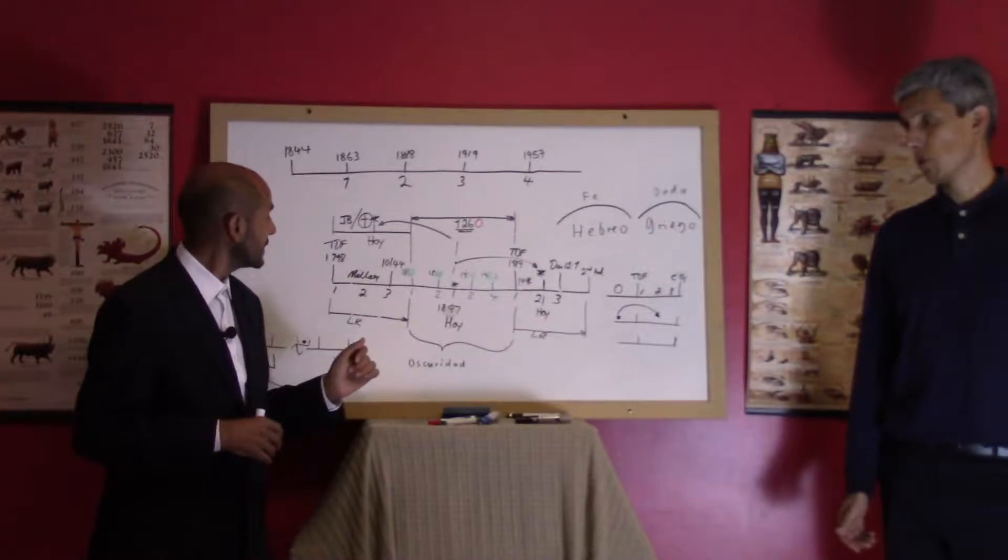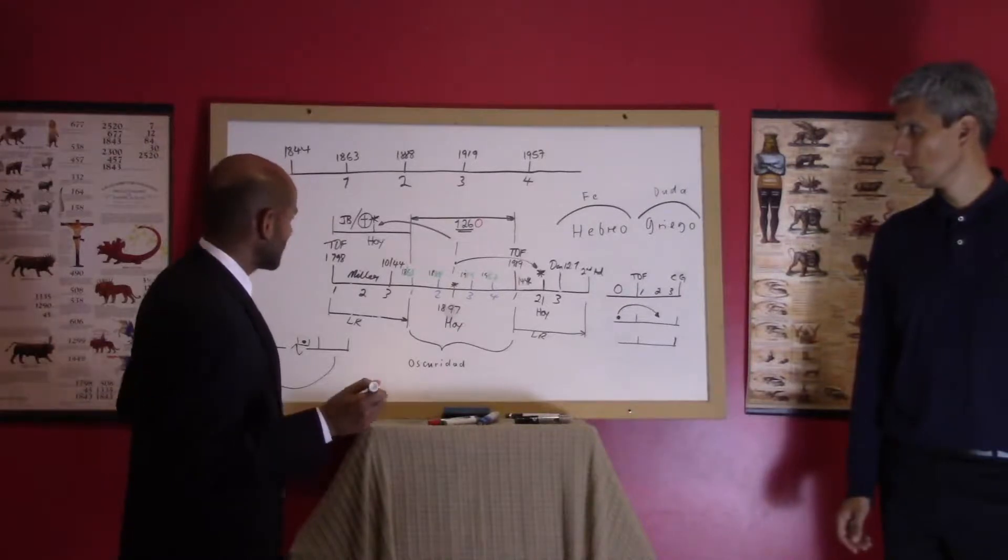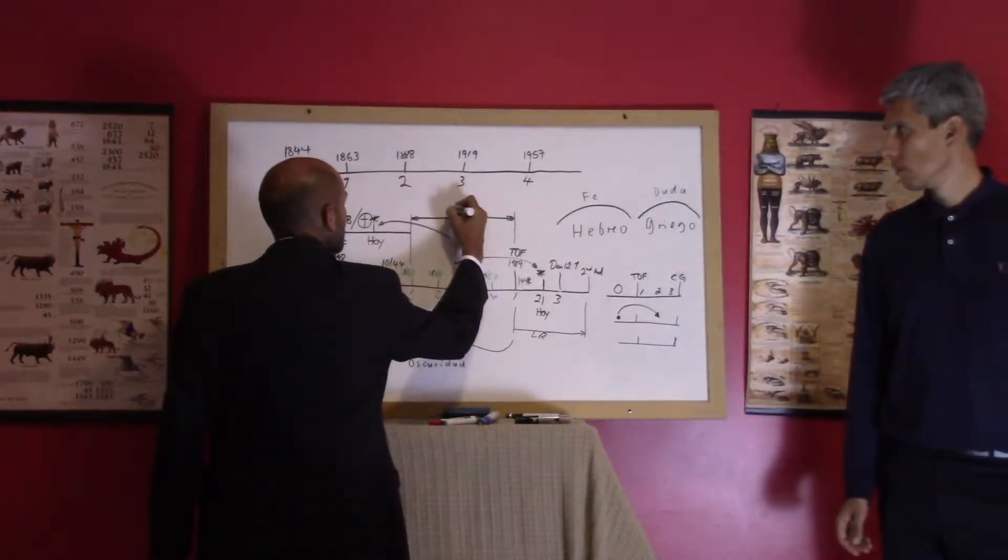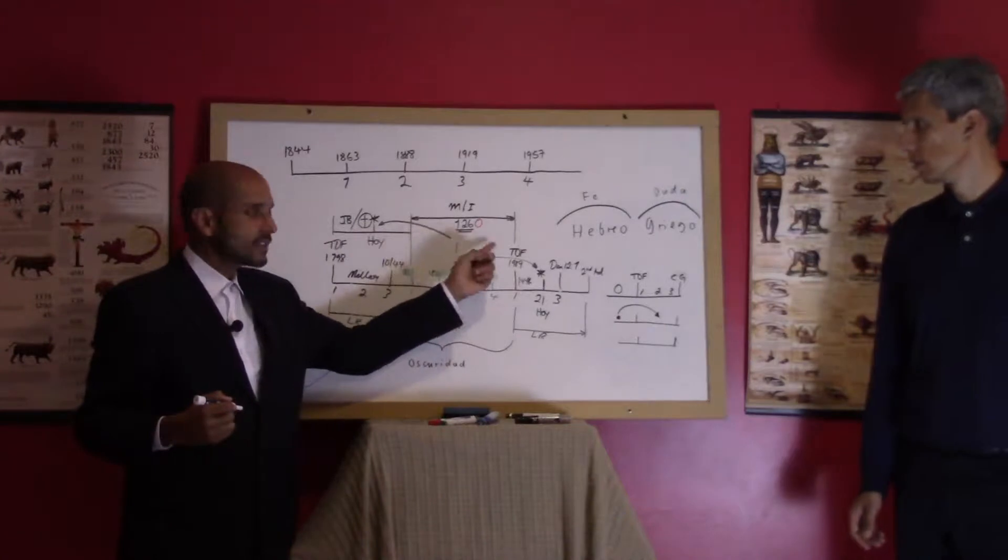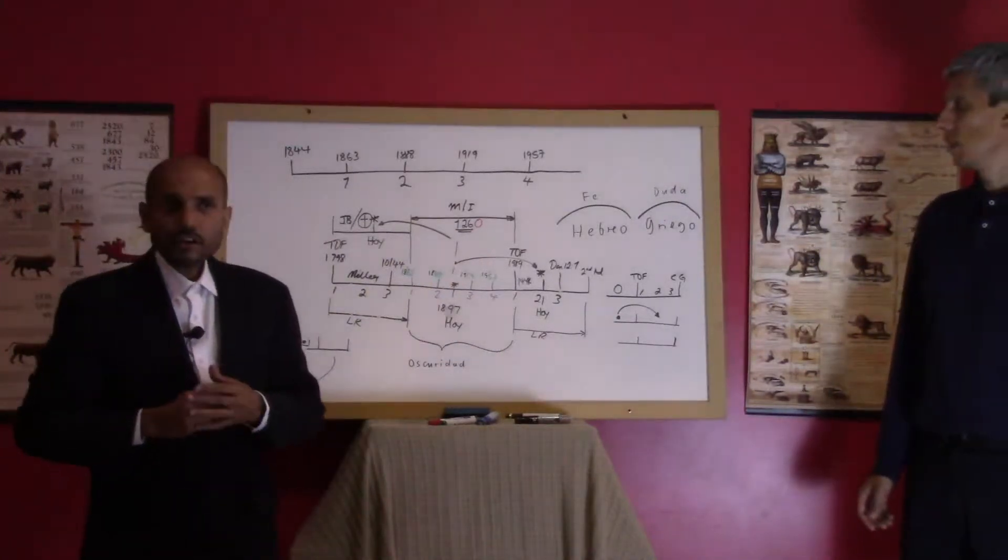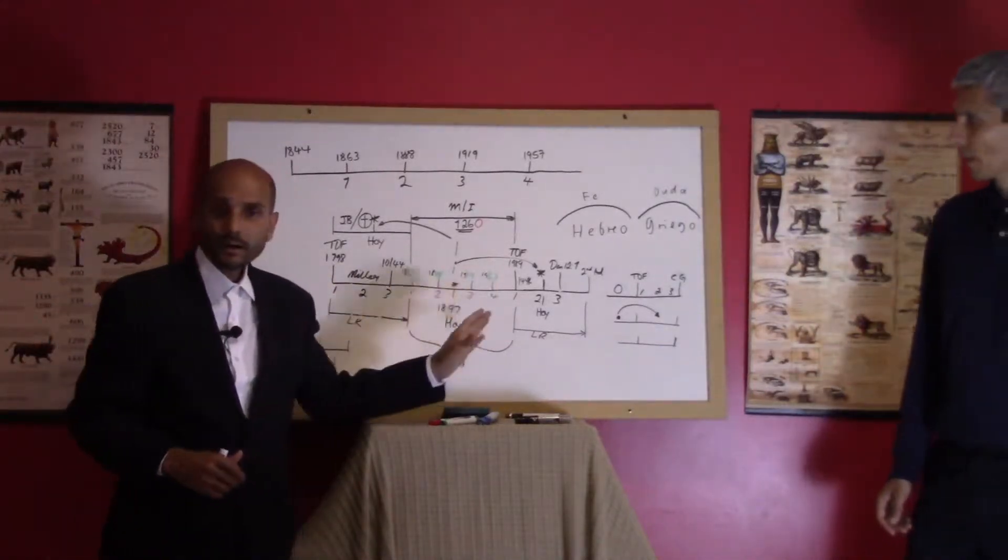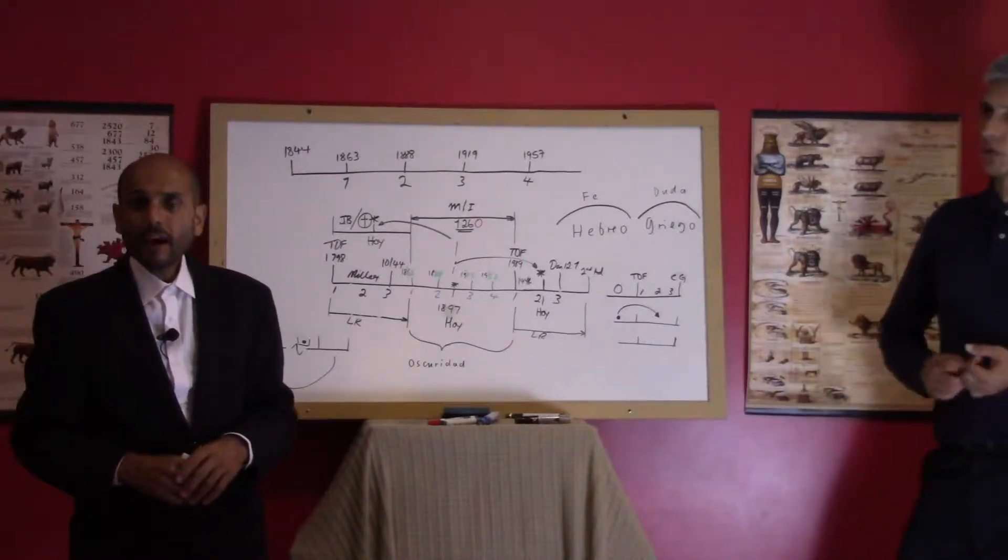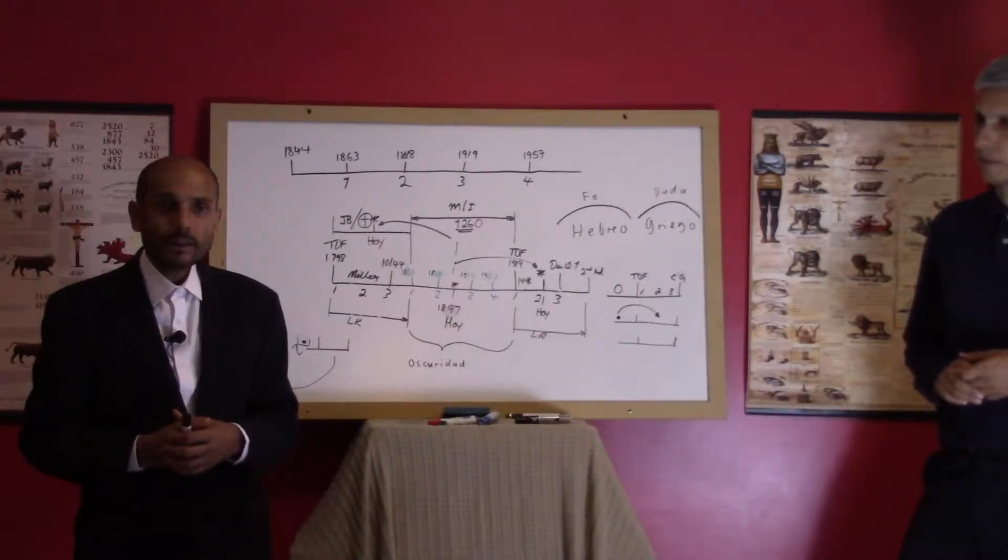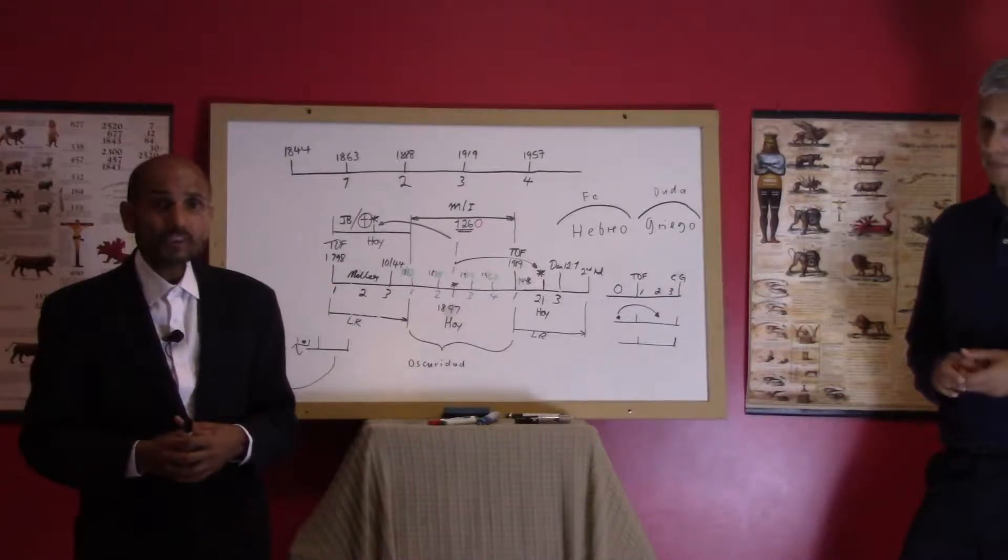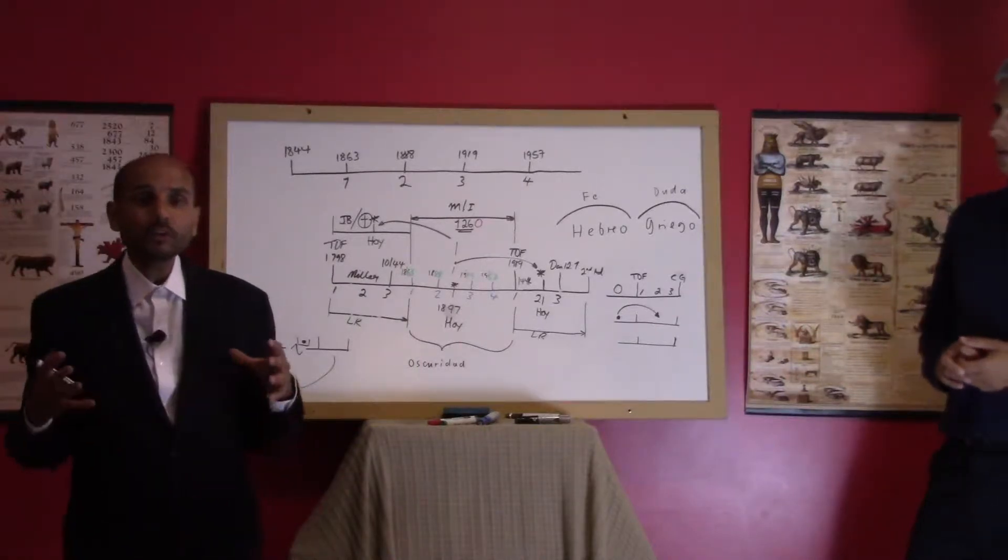We've got the mystery of iniquity which we've taken off somewhere. Part of this darkness and we can see it's connected to 1260. God's people are being held captive by Rome - but it's not pagan Rome, it's papal Rome.